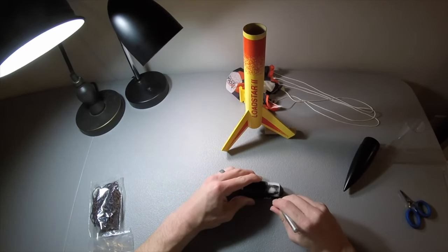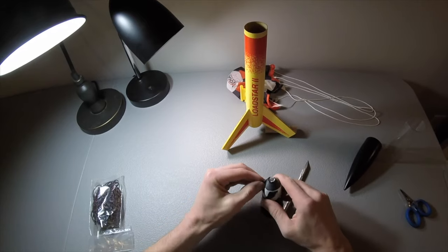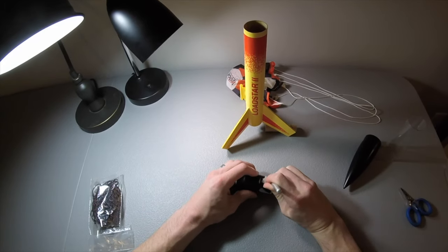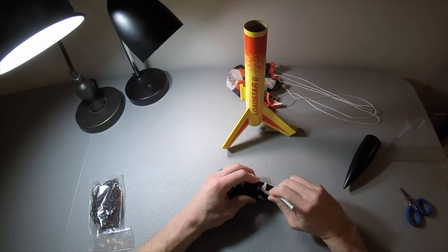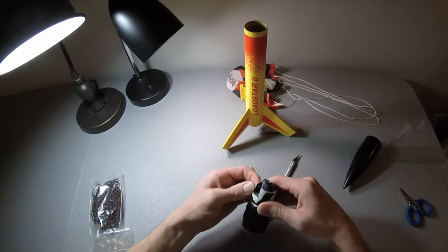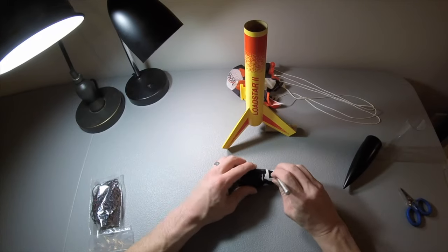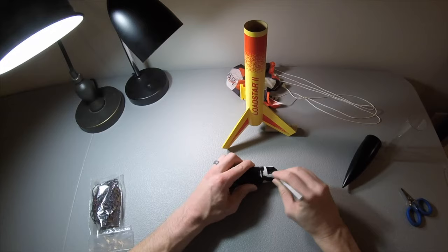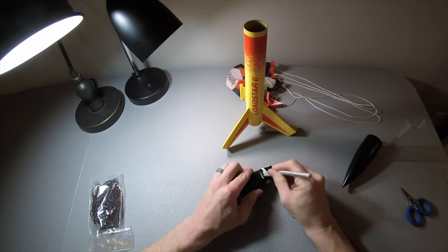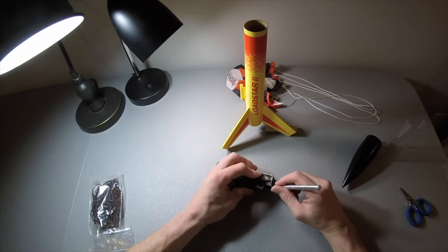What we're watching me do here is carve out the little hole in the payload coupler. This is where I will attach the shock cord that attaches the payload to the body tube. I had a little bit of difficulty carving out this hole. The plastic was pretty thick.